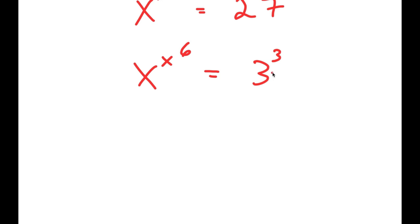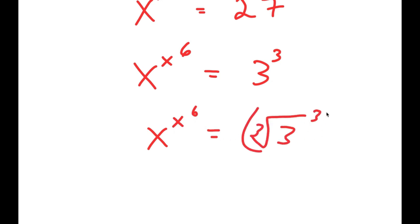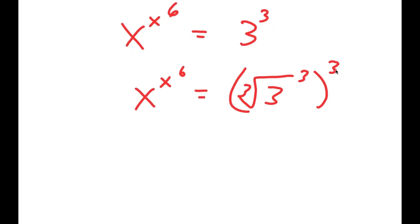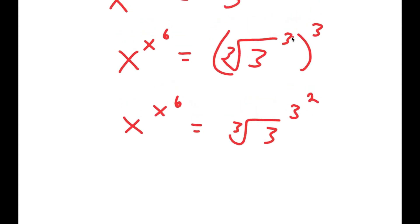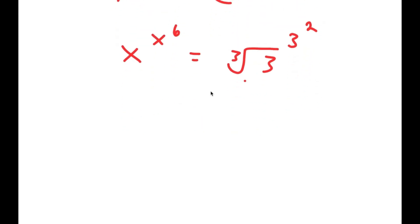This is the same thing as x to the power of x to the power of 6 is equal to the cube root of 3 to the power of 3 to the power of 3. So this is the same thing as x to the power of 3, which is equal to the cube root of 3 to the power of 3 squared, because 3 times 3 is 9 and 9 is the same thing as 3 squared.